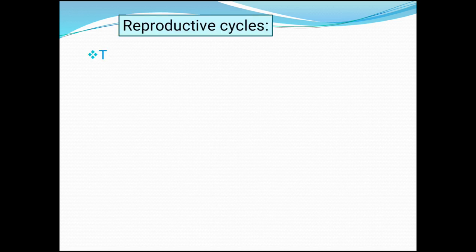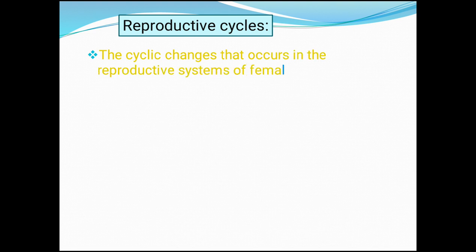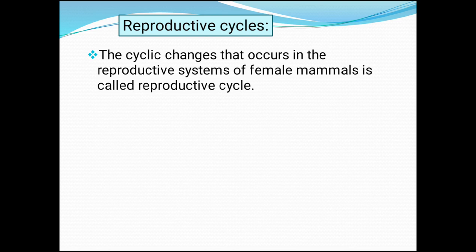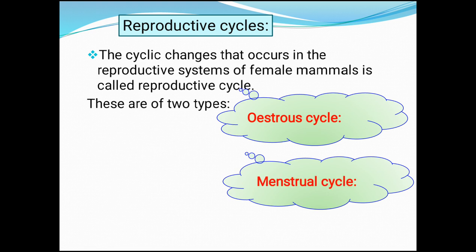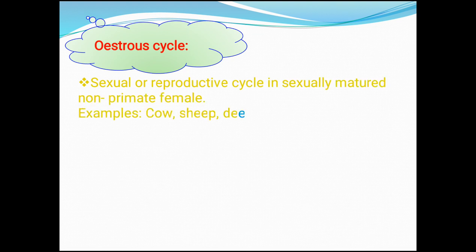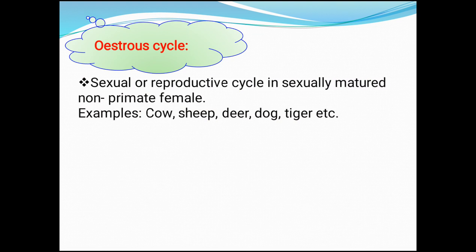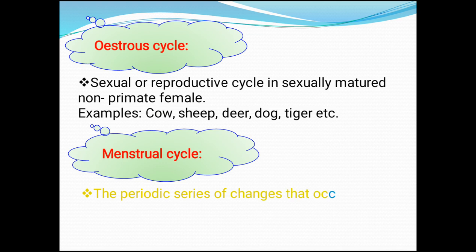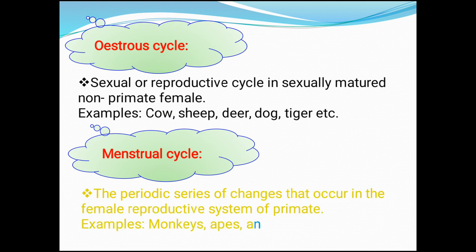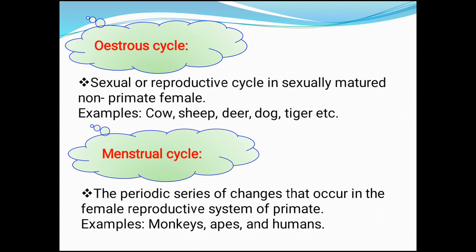Let us see reproductive cycles. The cyclic changes that occur in the reproductive systems of female mammals are called the reproductive cycle. These reproductive cycles are of two types: the estrus cycle and the menstrual cycle. Estrus cycle is a sexual or reproductive cycle in sexually matured non-primate females. Examples: cow, sheep, deer, dog, tiger, etc. The menstrual cycle can be defined as the periodic series of changes that occur in the female reproductive system of primates. Examples: monkeys, apes and humans.